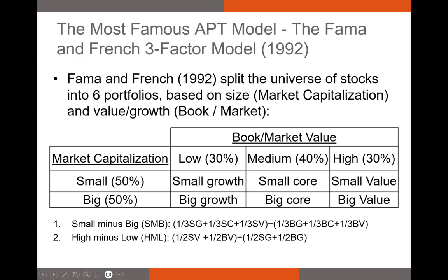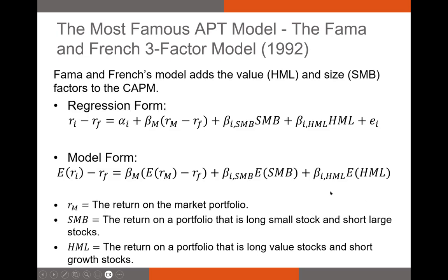Small-cap stocks go into three bins and large-cap stocks into three bins. Value stocks — those with high book-to-market ratios — go in one bin, and the bottom 30% by book-to-market go in another. To get the SMB factor, they took the returns on small stocks minus the returns on big stocks during the period as their size factor. The HML factor takes returns of high book-to-market stocks minus returns of low book-to-market stocks as the value factor.